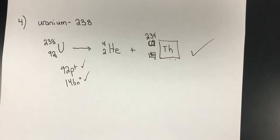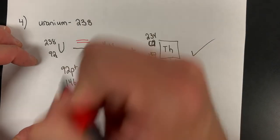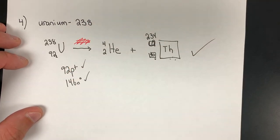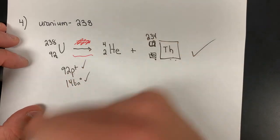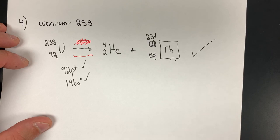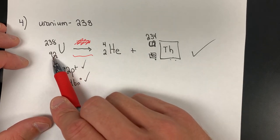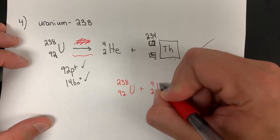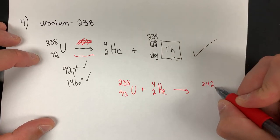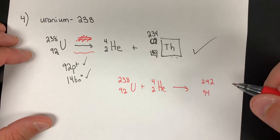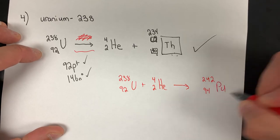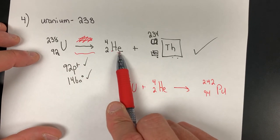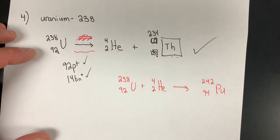To recap: a common mistake is wanting to write an equal sign — do not write an equal sign; write an arrow. Also, some students write the emitted particle on the reactant side, which gives the wrong answer. Whatever you are emitting, write it on the product side — the right side of the arrow. Thanks for tuning in.